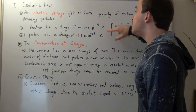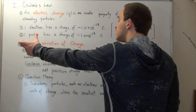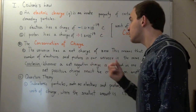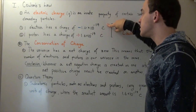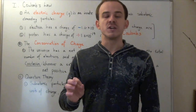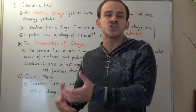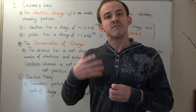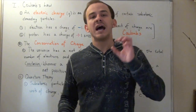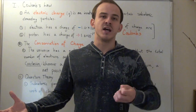Because electrons and protons have the same amount of charge — just negative and positive — if we had different amounts of protons and electrons, our universe would have some net charge. But since the universe has a net charge of zero, the number of electrons equals the number of protons. This means whenever there is a net negative charge created on one atom, there must be a positive charge created on another atom, and vice versa.